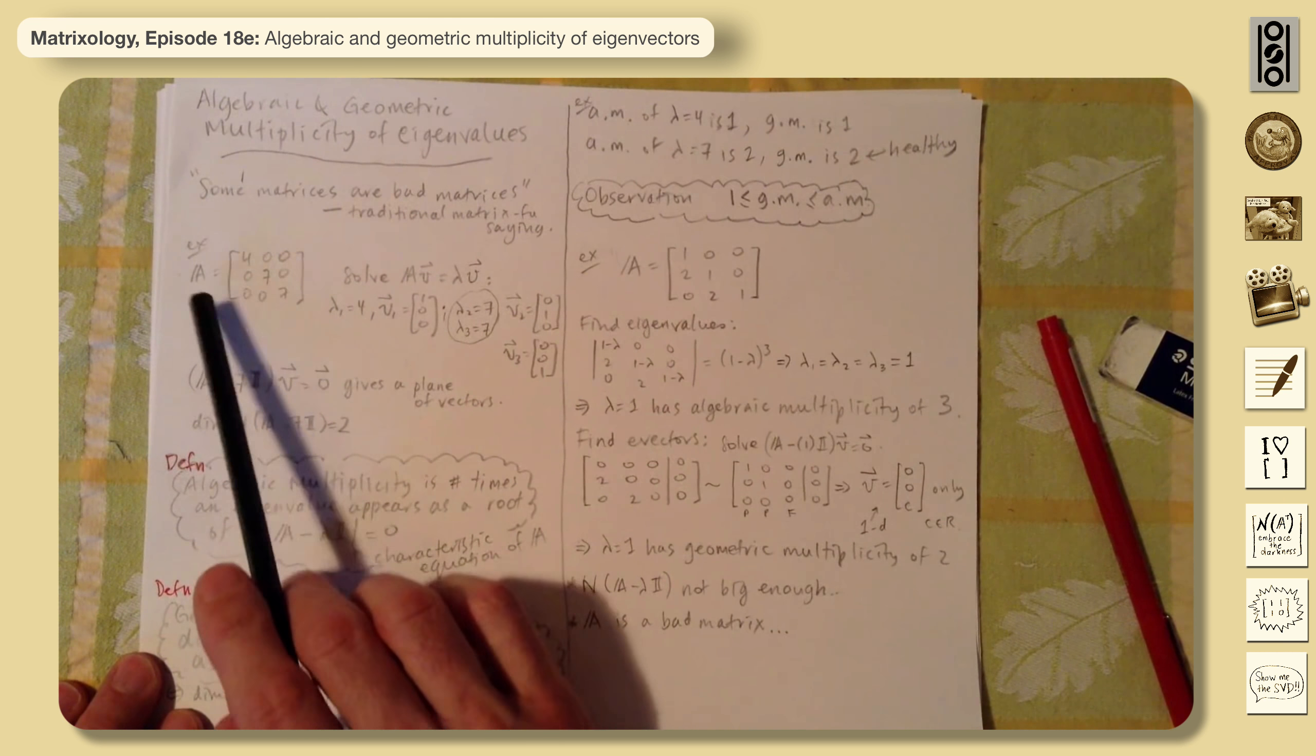So lambda 1 has an algebraic multiplicity of three. So that's fine. So does the identity matrix. It has three dimensions, like that. Eigenvalue one. And it has an algebraic multiplicity of three. Because it preserves every direction, it's fine. It has a full complement of eigenvectors.